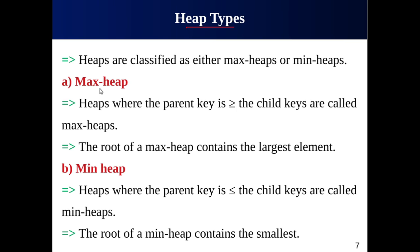The root of a max heap always contains the largest element — this is the beauty of it. We can easily implement a priority queue using a max heap since the largest value occupies the root node. However, if we want the smallest value at the root, such a heap is called a min heap. In a min heap, the parent key is less than or equal to its children, meaning the root contains the smallest value.